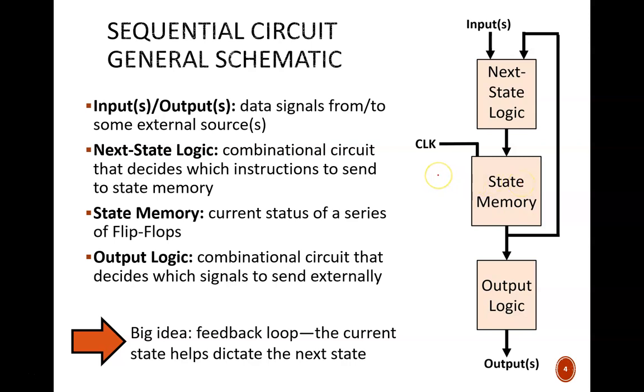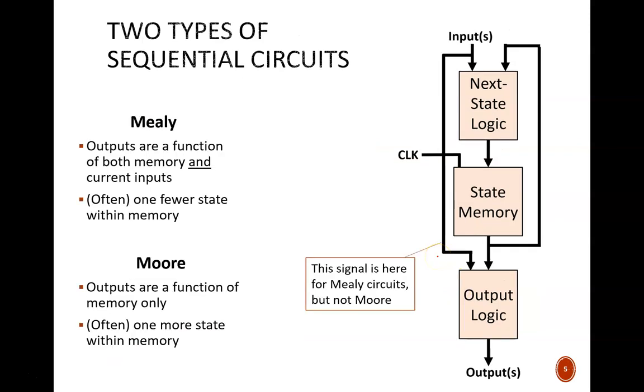The difference between Mealy and Moore circuits can be seen on this schematic. Here we have a Moore machine, because the output logic is not a function of the current inputs. There is no wire connecting the inputs straight to the output logic. But here, we see that wire up here. So this is a Mealy machine.